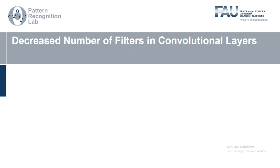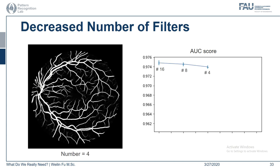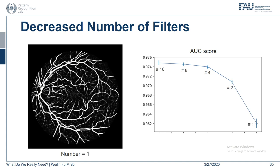How does the network perform with a decreased number of filters in the convolutional layers? We observe that the ROC score is basically stable even if the number of initial filters is reduced down to 4. With only two filters, the ROC score is still above 0.97. And when we have only one filter in the initial layer and the network contains around 500 parameters, the ROC score drops to around 0.96 — yet the prediction still gives reasonable segmentation.